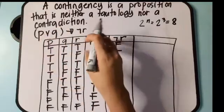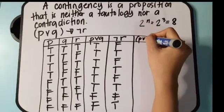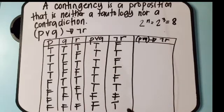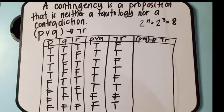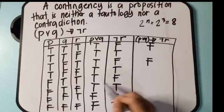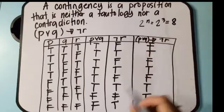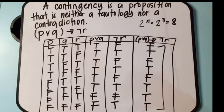Finally, we combine the disjunction column and the negation-of-R column using implication. Based on the truth table for implication, if the first proposition is true and the second is false, the result is false; the rest are true. So we look for true-false combinations and mark those as false. The result gives us a combination of true and false values.